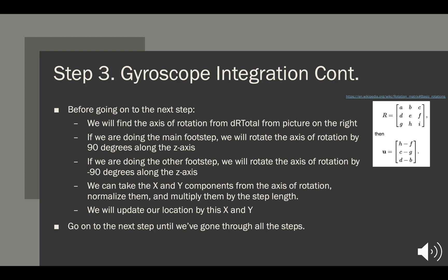To calculate step direction, we're going to take our dR total and find our axis of rotation from it by using the equation on the right. If we're doing a step with the main foot, we're going to rotate the axis of rotation by 90 degrees along the z-axis. But if we're doing a step with the opposite foot, we want to rotate the axis of rotation by negative 90 degrees along the z-axis, so that our system knows we're still moving in the forward direction.